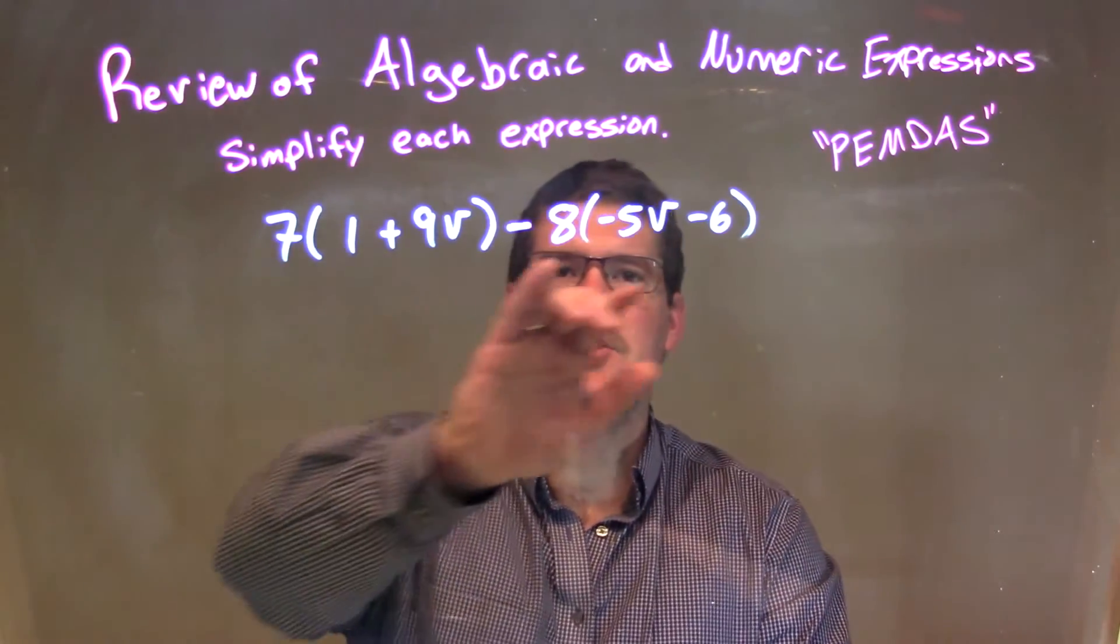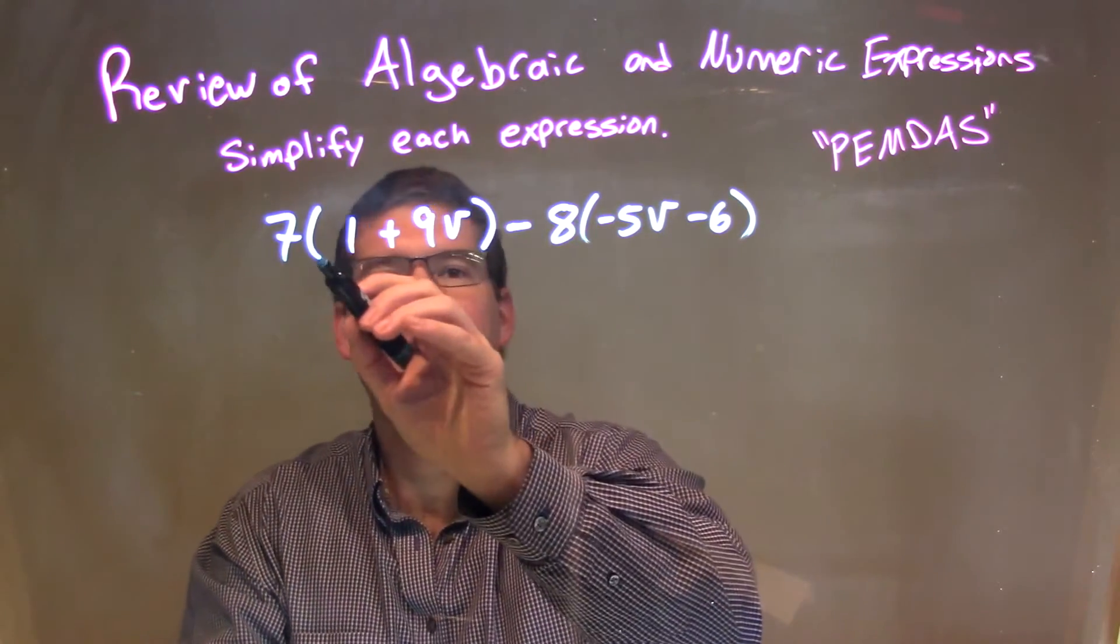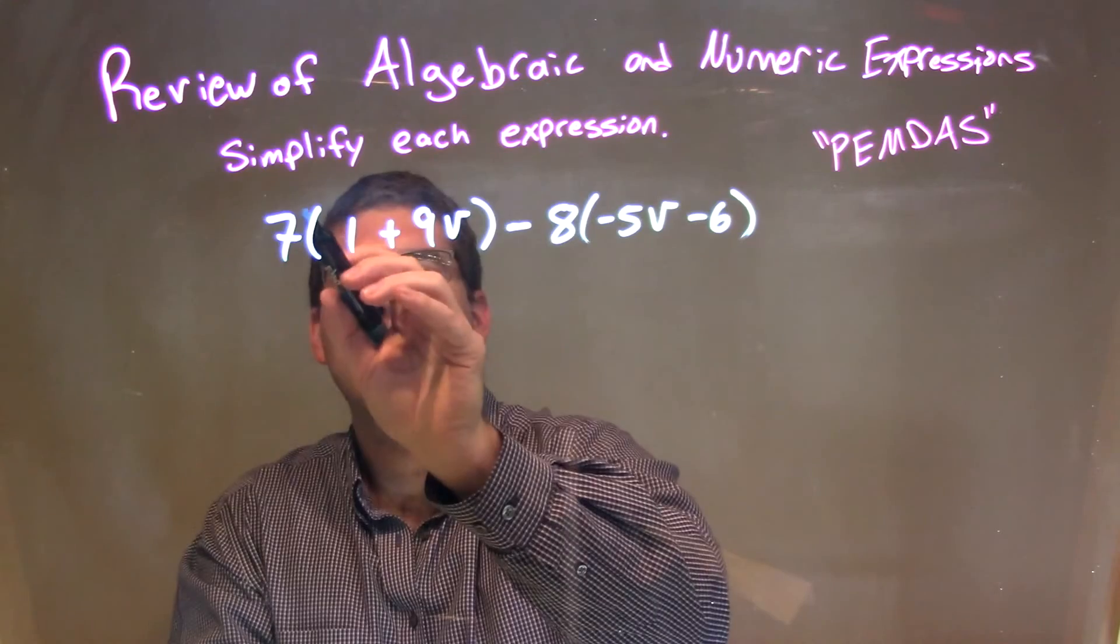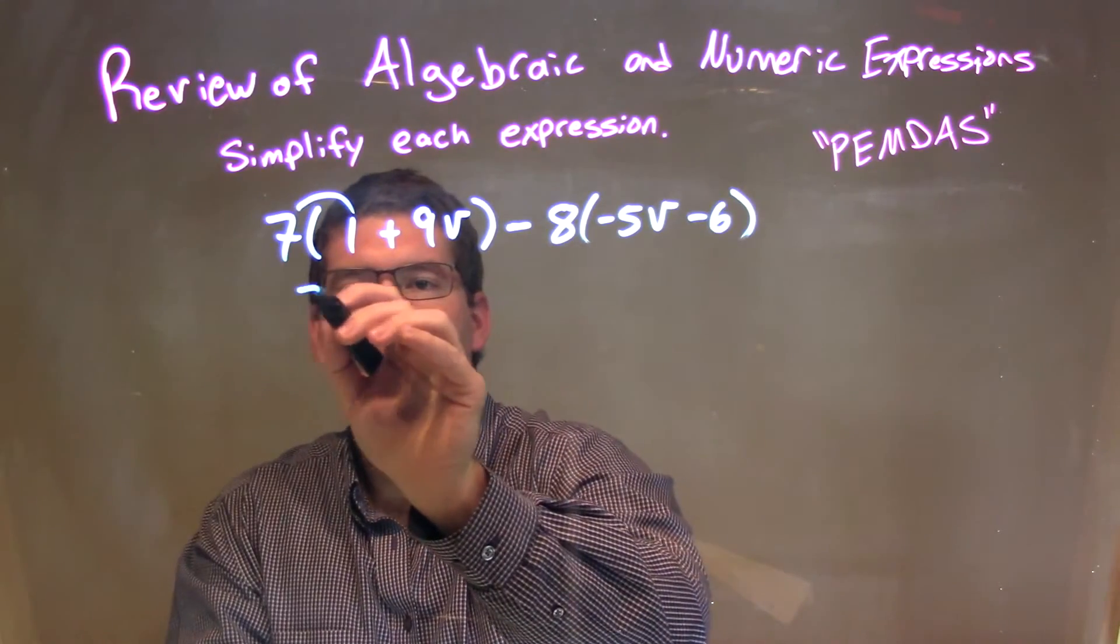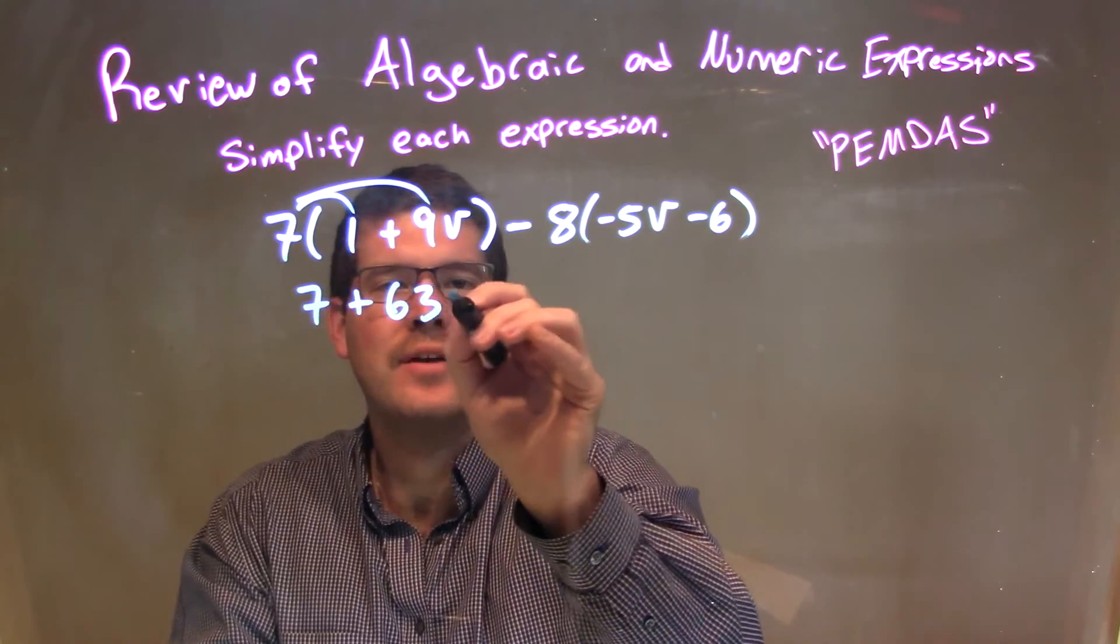Well, since within each parenthesis I don't have any like terms, I look to what's outside of it, and we see a lot of multiplication. So, I'm going to distribute: 7 times 1 would be 7, and 7 times 9b would be 63b.